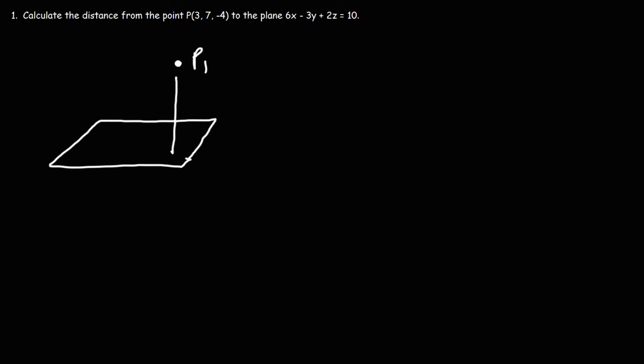We want the shortest distance, which we're going to call D. Now, let's say we have some other point that is on the plane, which we'll call P0. And we're going to draw a vector emanating from P0 pointing towards P1, and let's call that vector B.